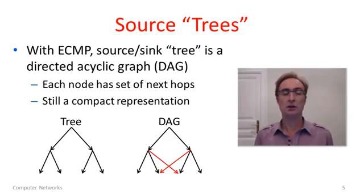Now equal cost multipath, since it generalizes shortest path routing, it actually changes our notion of a source tree and a sink tree. With ECMP, these source and sink trees are actually not trees anymore. They become a slightly more general structure called a DAG, which stands for directed acyclic graph.